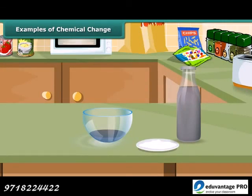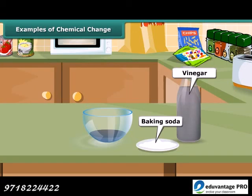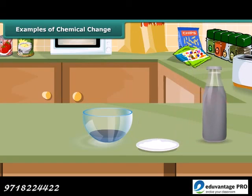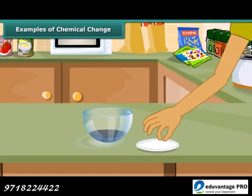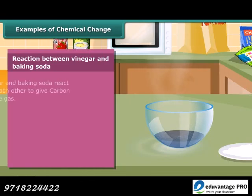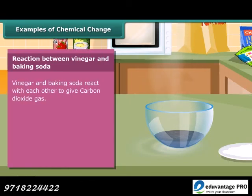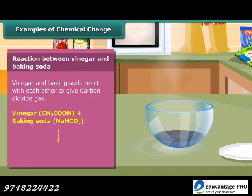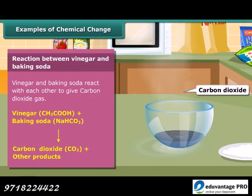Vinegar and baking soda are easily found in our kitchen. Take a little vinegar in a small bowl made of china clay and add a pinch of baking soda to it. You will hear a hissing sound and see bubbles of gas coming out. The evolved gas is carbon dioxide.